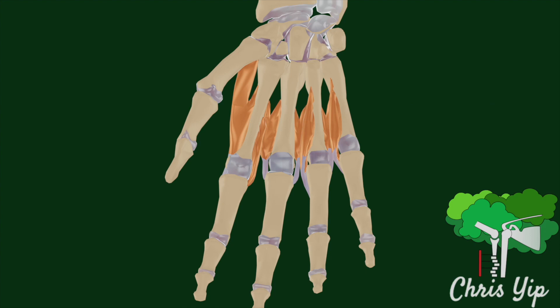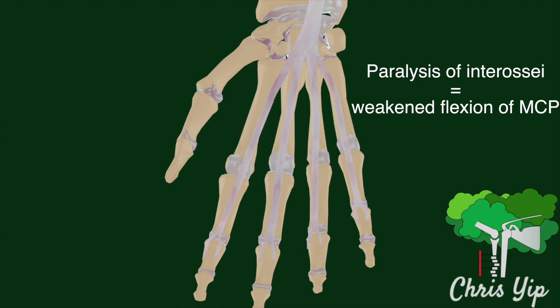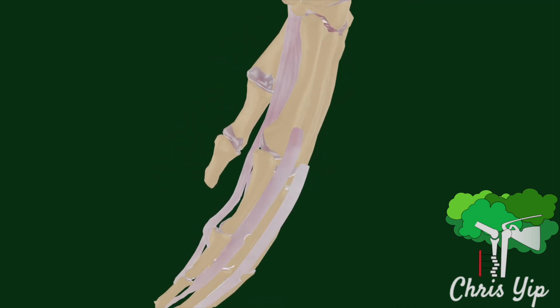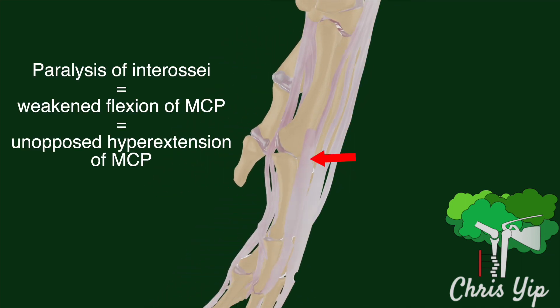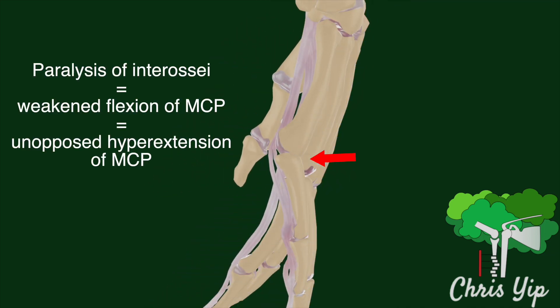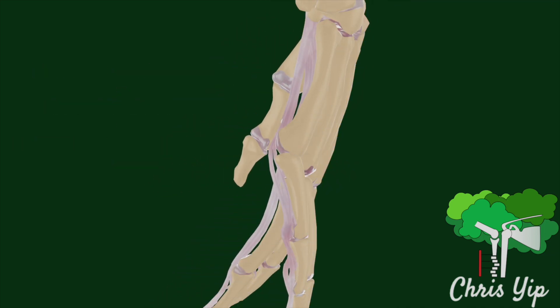With the paralysis of the interossea muscles, the flexion of the metacarpal phalangeal joints is weakened, leading to the unopposed hyperextension of these joints by the extensor muscles.